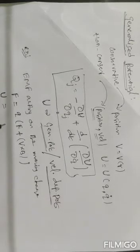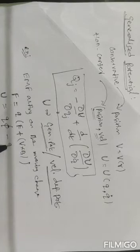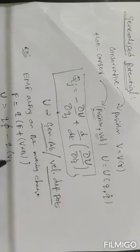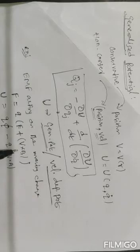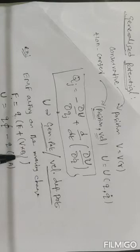Then U is equal to qφ minus q into v dot A. This is the Lorentz force. Here, q is the charge, E is the electric field, v is the velocity, and B is the magnetic field.